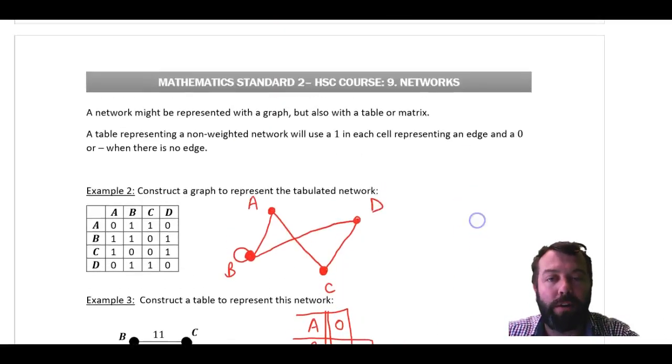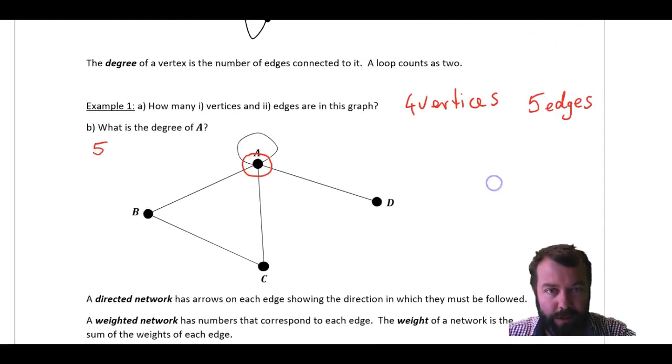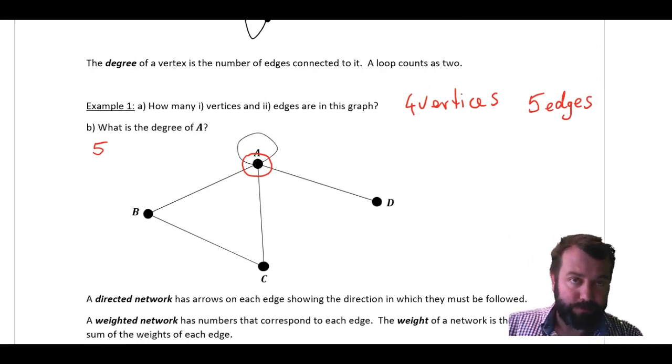And prior to that, we identified various elements of a graph. Vertices, edges, loops, the degree of a vertex. I hope so far this makes enough sense. If you've got any questions, jot them down. Ask me in class. See you then.